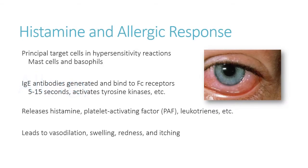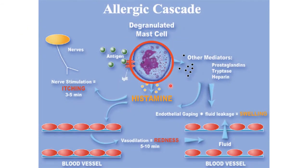Moving on to allergic conjunctivitis — we're focusing on the inflammatory cytokines released by basophils and mast cells. One of the major mediators is histamine. We'll also be talking about mast cell stabilizers, which prevent degranulation and the release of those inflammatory cytokines. Some drugs have both antihistamine and mast cell stabilizer activity. Other mediators include platelet activating factor and leukotrienes. Once mast cells degranulate, you get vasodilation, leaky capillaries, edema, tearing, swelling, redness, and itching.